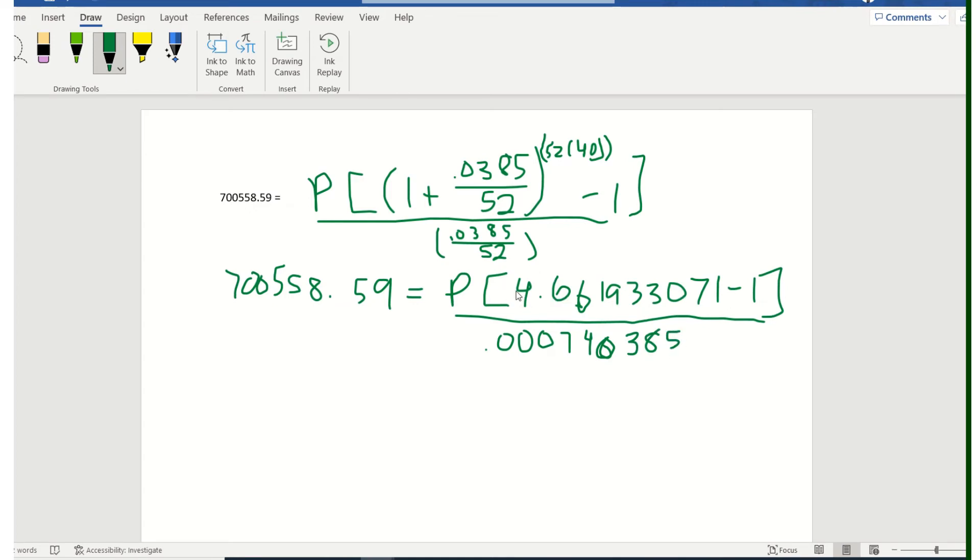Now I will put all of this part right here into my calculator. So the 4.66193307-1 minus 1, divided by this. Be sure to put this part in parentheses as you do it. So in other words, I'm just going to get something that's sitting here with my P. 5.000740385 and this is 49.45984955.